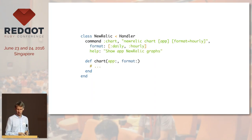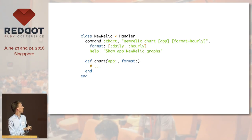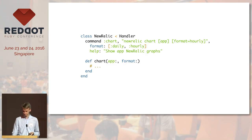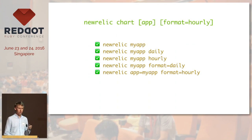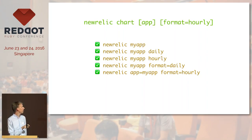Let's look at a more complex handler with two arguments. This handler displays a chart from Eurolake. The first variable is application name, the second is format — an enum field that can be daily or hourly — with a help string. This pattern matches multiple user inputs: 'my app' uses the default hourly value, or you can override it, or define it explicitly, which is useful when you have more arguments and may not remember their order.